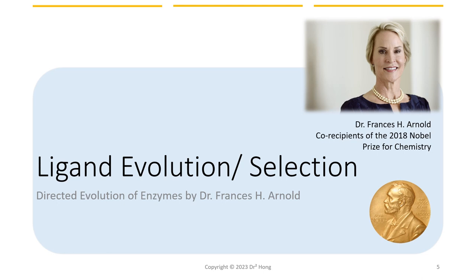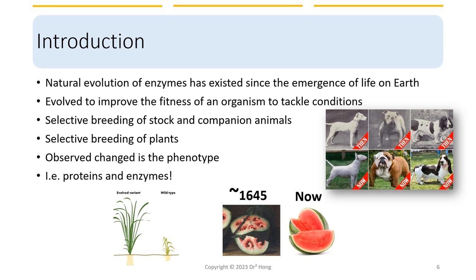Almost all of us have heard of the term evolution at the organism level, and more precisely, evolution by natural selection, which happens at a very slow pace. The idea of evolution to improve the fitness of an organism to tackle the changing environment is not new. Humans have long been practicing directed evolution in the forms of selective breeding.